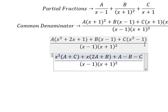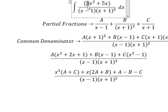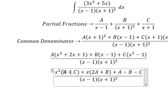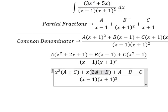Now we need to compare coefficients. We have 3, so that means A plus C equals 3. We have 5x, so 2A plus B equals 5. For the constant, we don't have a number, so A minus B minus C equals 0.